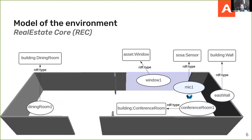We also need some model of the environment. In the case of buildings, we use Real Estate Core, which captures not just the name but what type of room it is — for example, is it a conference room or a dining room? Based on whether an event is in a dining room or conference room, that can influence the interpretation of what might be going on.